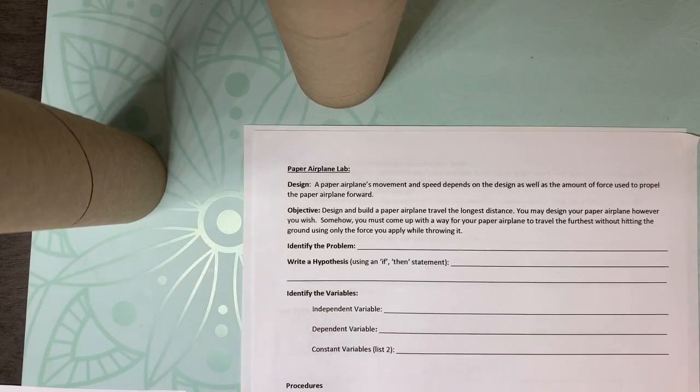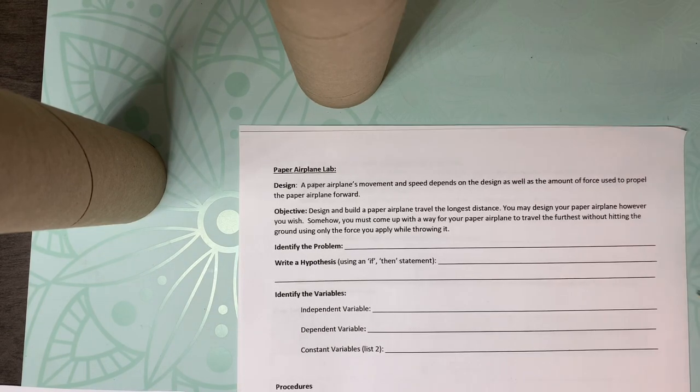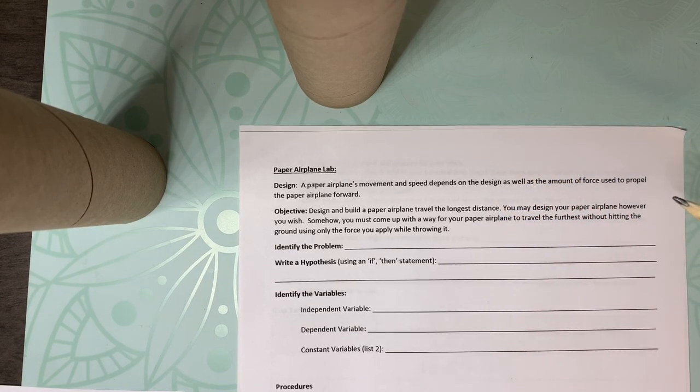All right, students. So for your week of homework, at least for the first section, you are building a paper airplane and you're testing it out. We're pretty much going over the design process and then the scientific method, if you remember those back from the very beginning of science.